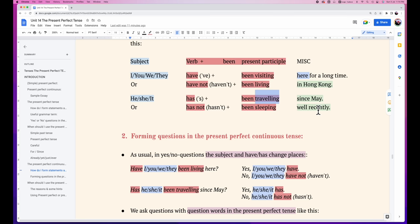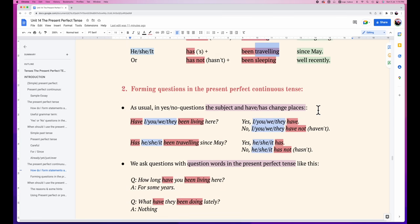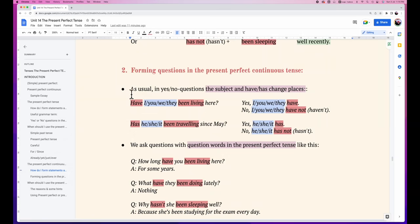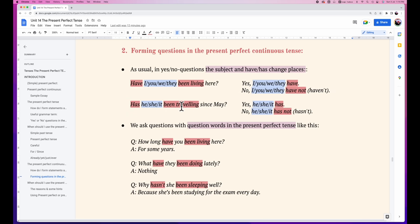Then how do we form questions with present perfect continuous? Let's take a look. Usually in yes or no questions the subject and the have or has would change places. Example: Have you been living here? Yes, I have. Or no, I have not or I haven't. Has she been traveling since May? Yes she has. Or no she hasn't or she has not.